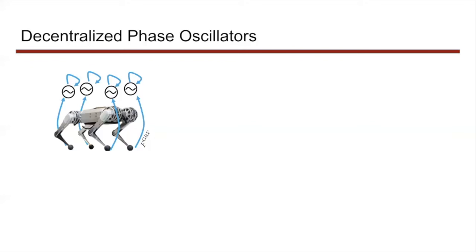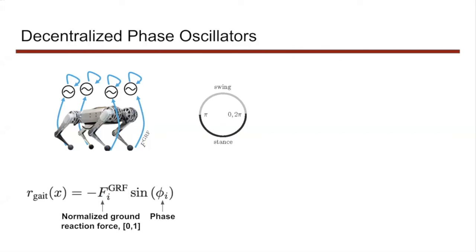Each leg has its own oscillator, with 0 to pi representing swing phase and pi to 2 pi representing stance phase, encouraged by this reward to make contact only during stance phase.